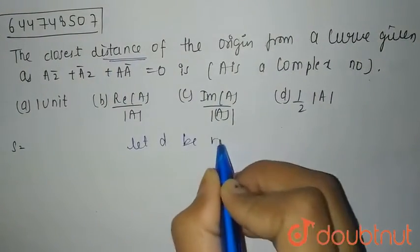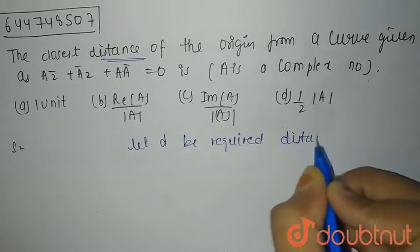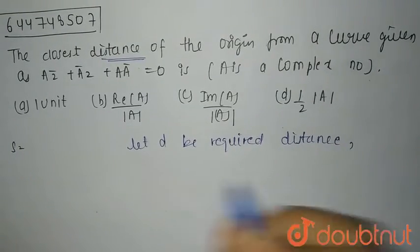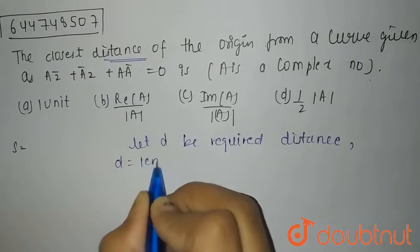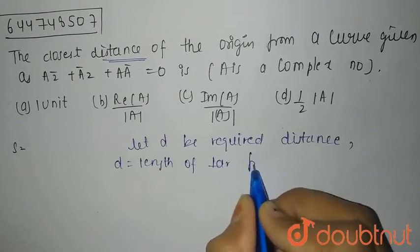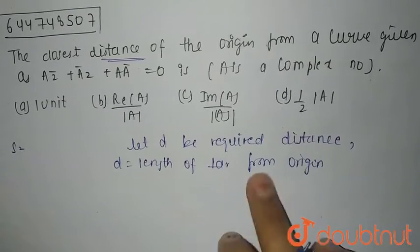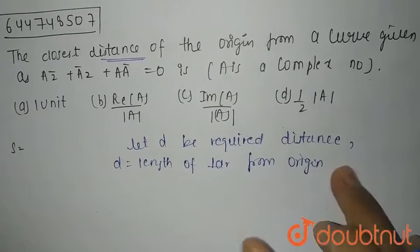Let d be required distance then d equals length of perpendicular distance that is perpendicular from origin as you know that when you talk about shortest distance it is only about perpendicular from origin.